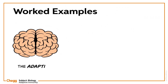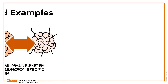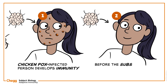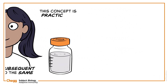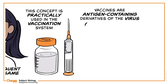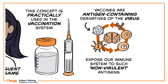The adaptive immune system creates a memory specific to an antigen. This is the reason why a chickenpox-infected person develops immunity before subsequent exposure to the same antigen. This concept is practically used in the vaccination system as well. Vaccines are antigen-containing derivatives of the virus, whereby we expose our immune system to such non-virulent antigens to create a memory in our adaptive immune system, and make our body prepared for the real-time exposure of the same pathogen.